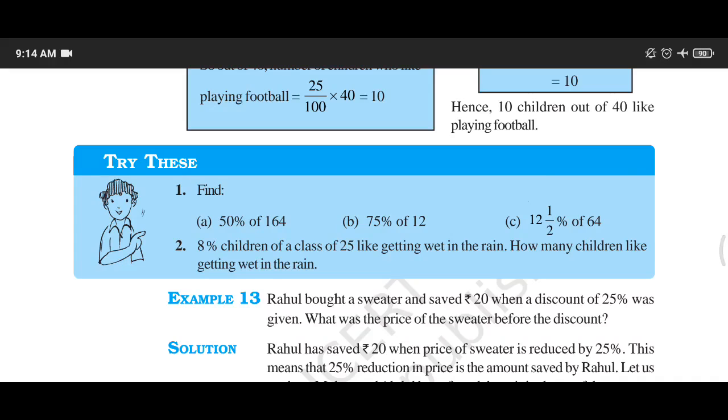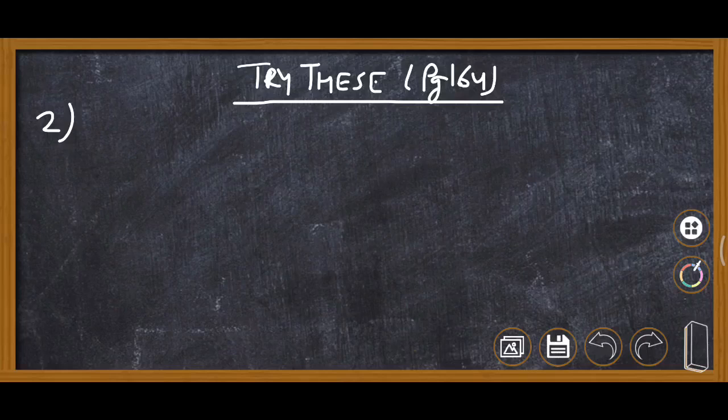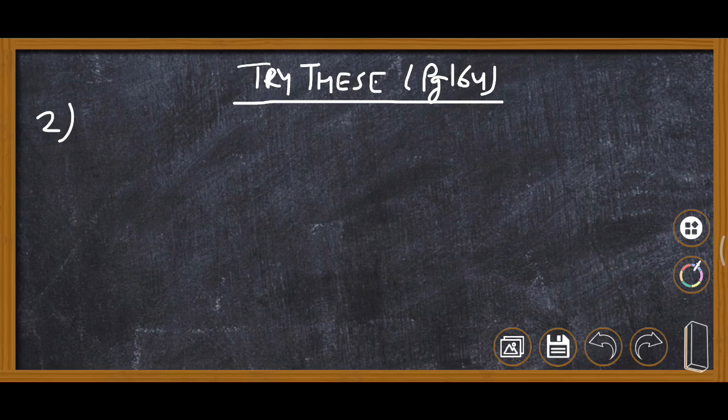Now question number 2: 8 percent children of a class of 25 like getting wet in the rain. It is given 8 percent like to get wet in the rain. Now here we are required to find out the number of students who like to get wet in the rain.